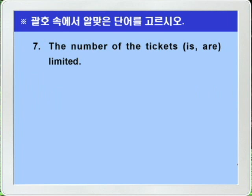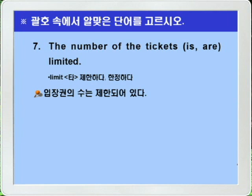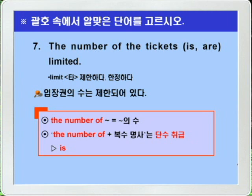Question 7: 'The number of the tickets is/are limited.' As mentioned in Question 5, 'a number of' means 'several' and is treated as plural. However, when the definite article 'the' is used instead — 'the number of ~' — it means 'the number of ~' and is treated as singular. Therefore 'is' is the answer. Remember: 'a number of' = plural; 'the number of' = singular. Answer: The number of the tickets is limited.